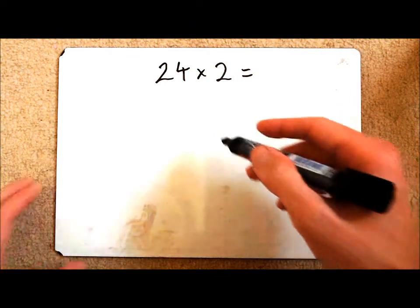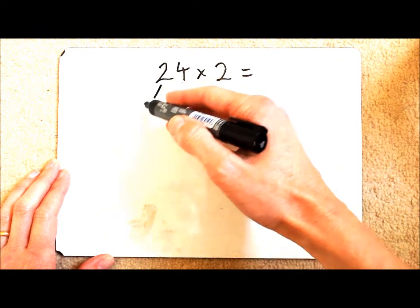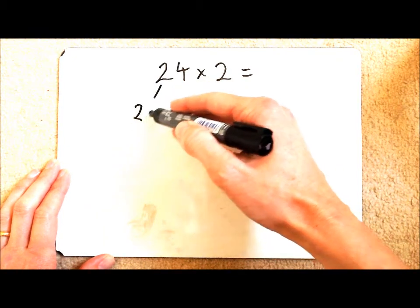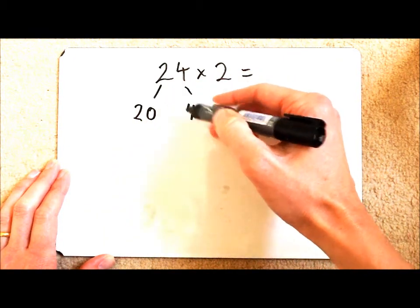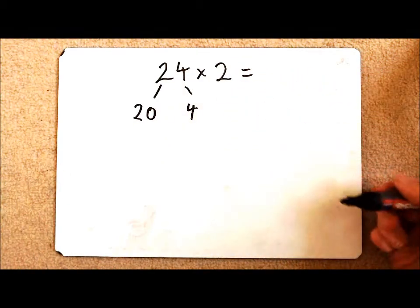The first thing we're going to do is use our partitioning knowledge to show that we know that this number 24 is made up of 20 in the tens column and 4 in the ones column.